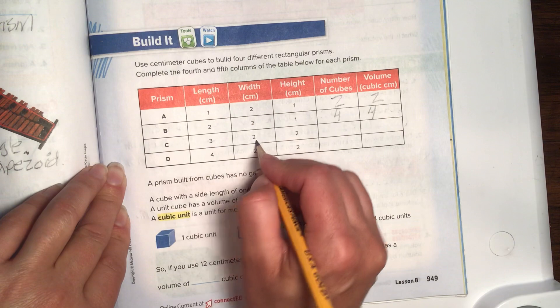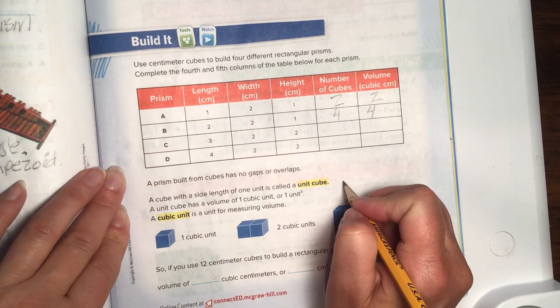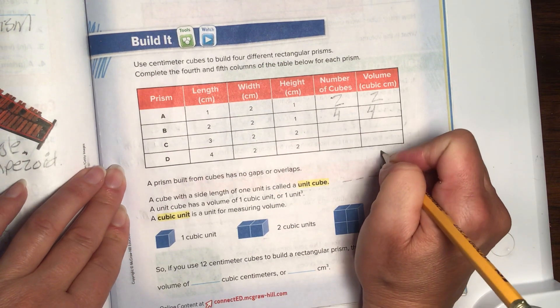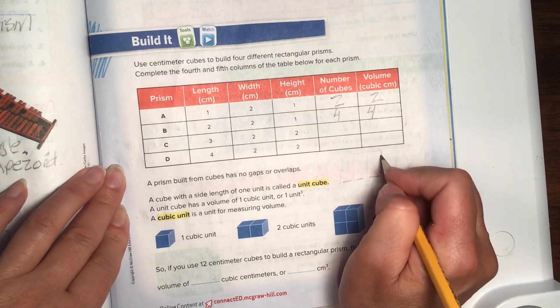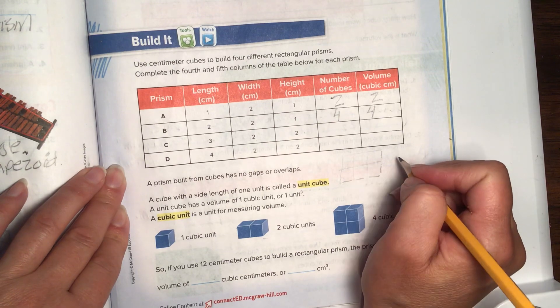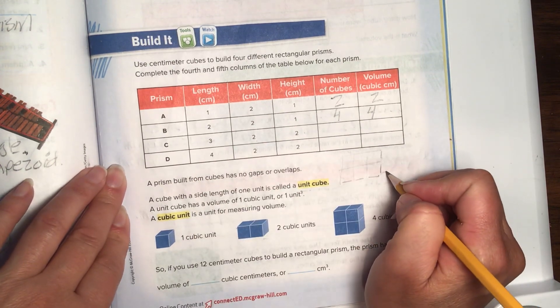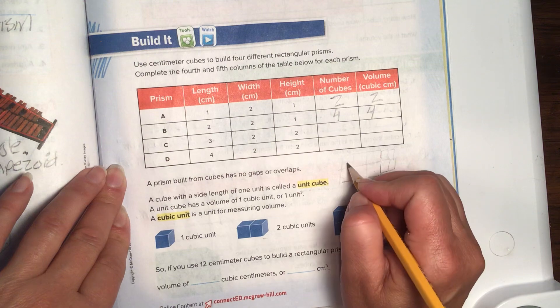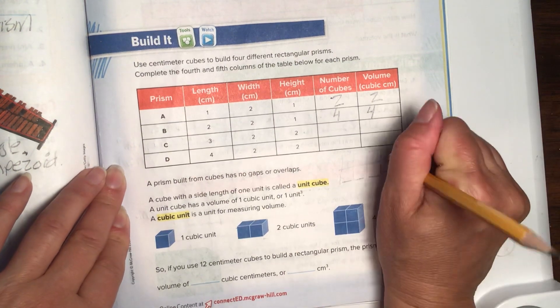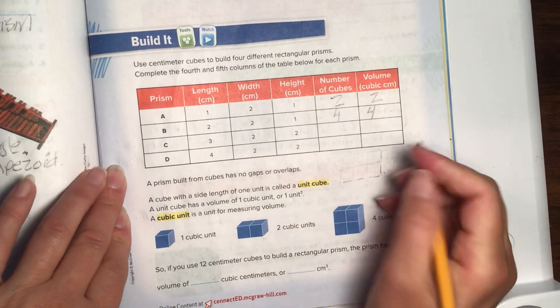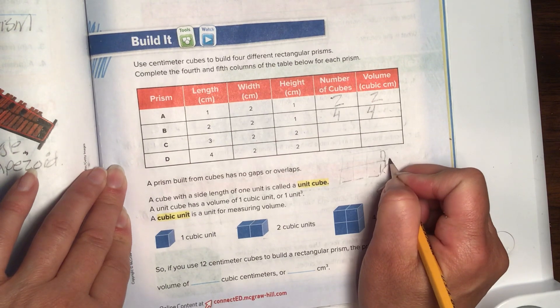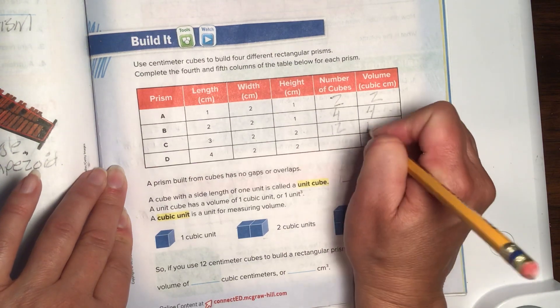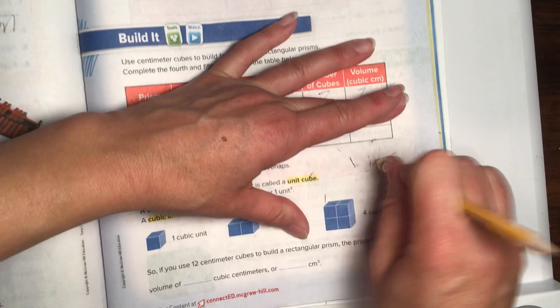Alright, so this one has 3 times 2 times 2. So, there are 3 blocks. 1, 2, 3. Then, there are 2 high. 1, 2. So, then we have something kind of like that. Then, and it says that we are going to go 2 deep. So, there would be 1, 2. So, if we have 1, 2, 3, 4, 5, 6. Then, we are going to go 2 deep. So, it actually would be like that. If we go 2 deep, it would actually be 12. 12 cubes. Good deal. Let's dive into the next one.